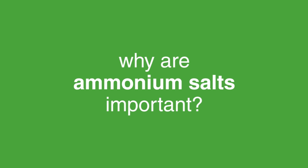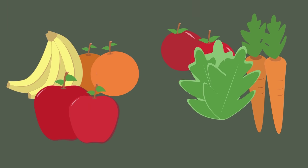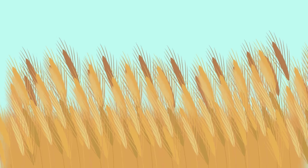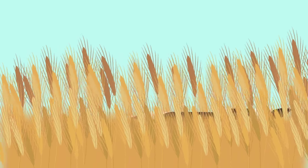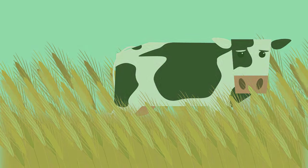Why are ammonium salts important? Well, if you've eaten anything before studying today — whether it was fruit, vegetables, bread, or something more processed — at least some of the crops that were grown to make your food, or perhaps feed the animals that went into your food, were almost certainly fertilized using an ammonium salt.